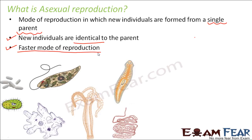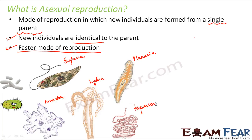Asexual reproduction is commonly seen in unicellular organisms such as euglena, amoeba, and other unicellular protists. It is also seen in hydra, planaria, and tapeworms — these are multicellular organisms but they are lower animals with comparatively simpler body organization.